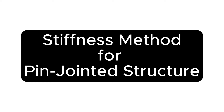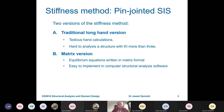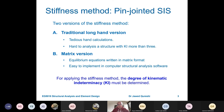Today's lecture is about the stiffness method applied to pin-jointed structures. There are two versions: the traditional hand method, which is tedious and difficult to analyze, and the matrix version, which I will focus on. In the matrix version, equilibrium equations are written in matrix format, making it easier to solve by hand and also easier to implement in computers.